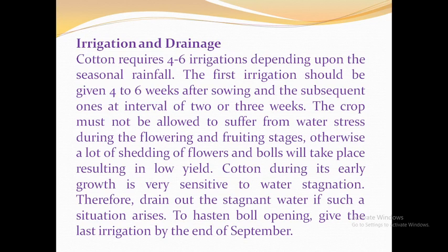For irrigation and drainage, give 4 to 6 irrigations depending upon seasonal rainfall. The first irrigation should be given 4 to 6 weeks after sowing, and subsequent ones at intervals of 2 to 3 weeks. The crop must not be allowed to suffer from water stress during the flowering and boll formation stages, otherwise heavy shedding of flowers and bolls will take place, resulting in low yield. Cotton is very sensitive to water stagnation during early growth, so drain out stagnant water if such a situation arises. Give the last irrigation by the end of September.